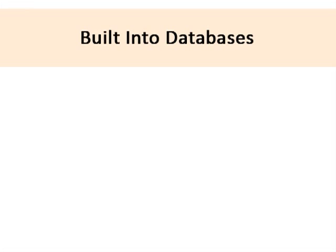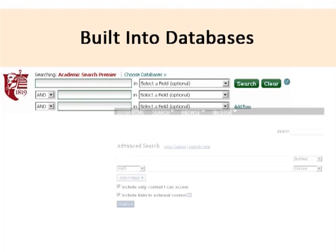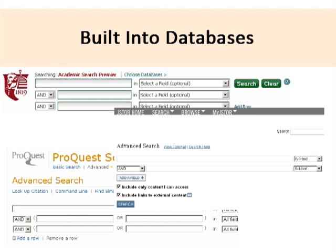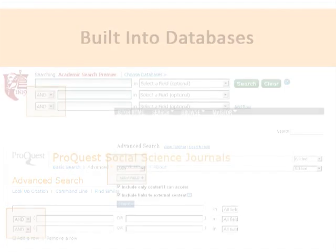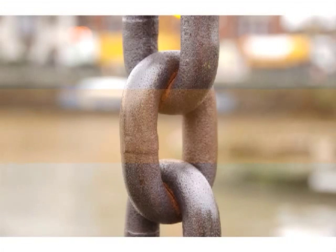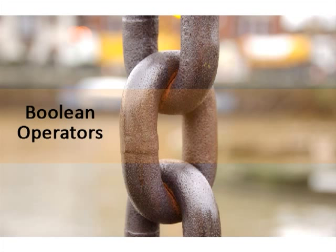The functionality for constructing your search is typically built into database search interfaces, usually through drop-down menus that default to AND. These connecting words in the drop-down menus are called Boolean operators, and they can help you better limit or expand your search for more relevant results.